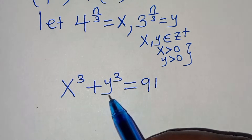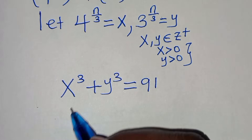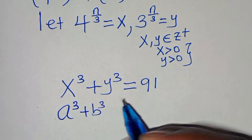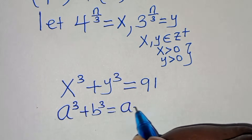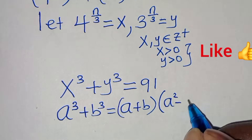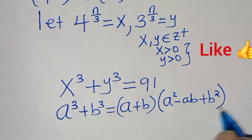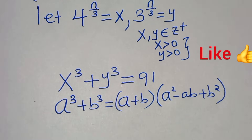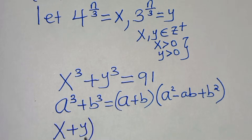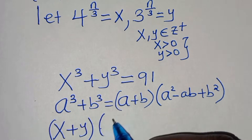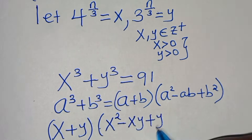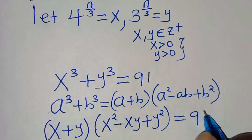Now x³ + y³ is the sum of two cubes, expressed using the identity a³ + b³ = (a + b)(a² − ab + b²). Applying this identity, we have (x + y)(x² − xy + y²) = 91.